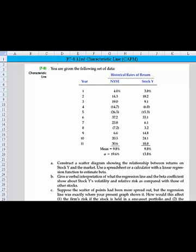Hi, everyone. Let's take a look at problem 7-8, dealing with the characteristic line of CAPM. You're given the following data, and we've got some historical rates of return for the New York Stock Exchange and for Stock Y for 11 years. We also have the average return given by the mean and the standard deviation of the New York Stock Exchange and Stock Y.